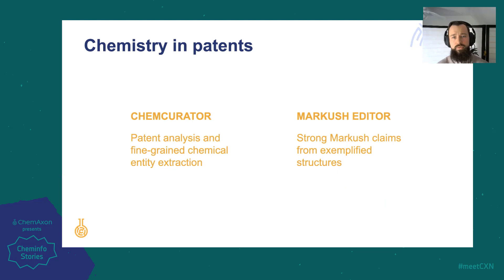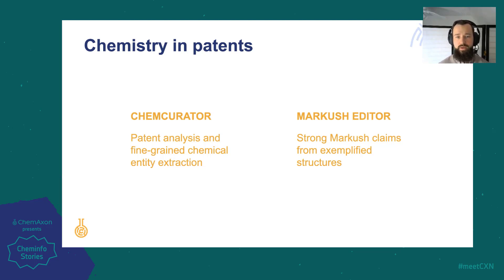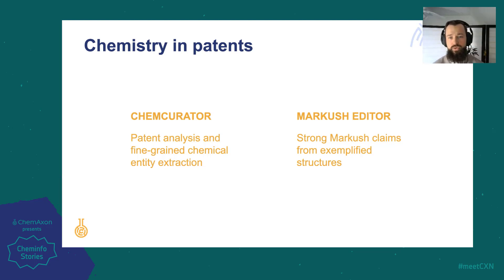ChemCurator unites the power of our naming and chemical entity extraction technologies with Markush visualization in a desktop interface. The result is a simple yet powerful application that helps to manually recreate Markush claims from existing patents, proving very useful in freedom-to-operate analyses. If you want even more, Markush Editor allows you to auto-generate Markush structures from a set of example structures and create strong claims using an interactive user interface — the perfect tool for anybody working in the patent drafting workflow.